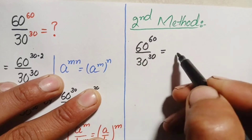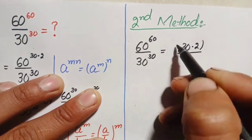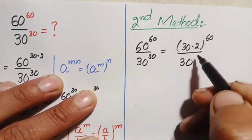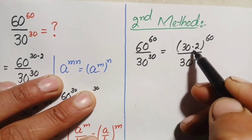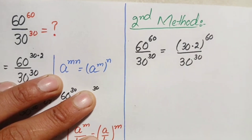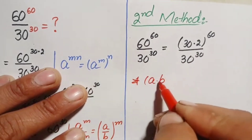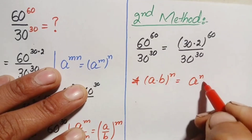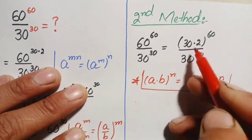In this method we factorize the base. We write 60 as 30 times 2, so the numerator becomes 30 times 2, all raised to power 60, divided by 30 raised to power 30. In the numerator we apply the identity: a times b raised to power n equals a raised to power n times b raised to power n.